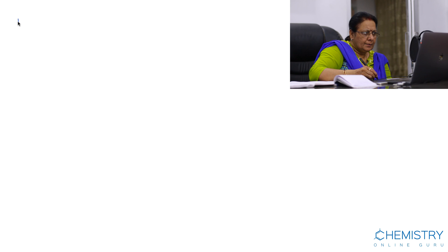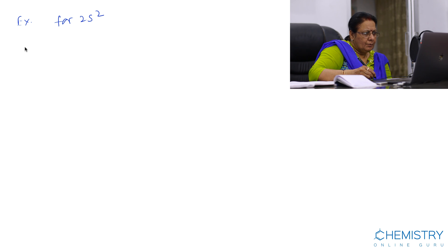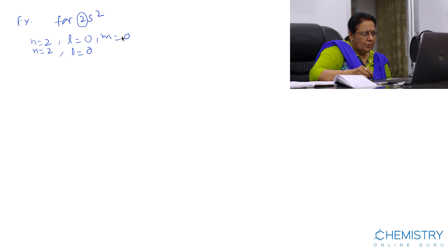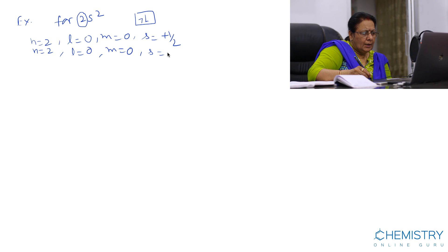The second example is for 2s². The value of N is 2 for both electrons. The electron is present in the S subshell, so the value of L is 0. If L is 0, then M is 0. For the first electron, spin is plus half. For the other electron, spin is minus half.